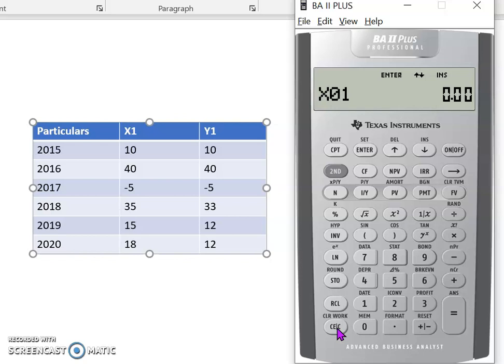It's already prompting me details for X1 at time period 1, which is 2015. So I put in 10, which is the 10% return, enter, setting X1 equal to 10, and then use the down arrow to go to Y1. So Y1 would also be equal to 10 and enter. I'm setting Y1 equal to 10 and then going in for the down arrow key.